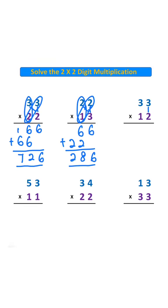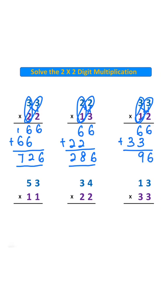3 times 2 is 6. 3 times 1 is 3. 6 plus 0 is 6. 6 plus 3 is 9. 0 plus 3 is 3. Answer is 396.